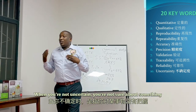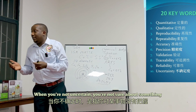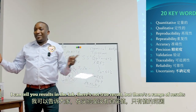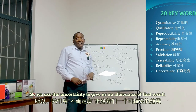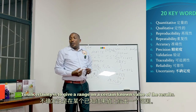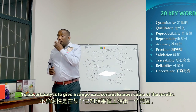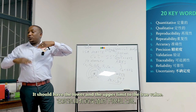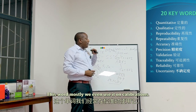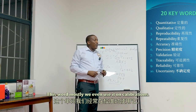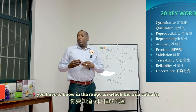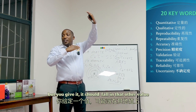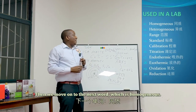The tenth word is uncertainty. When you're uncertain it means you're not sure about something. In the lab there's no single true result — there's a range of results. We use uncertainty to give an allowance on that result. Uncertainty gives a range on a certain known value; results should have a lower and upper limit relative to the true value. We mostly use it in calibrations — when calibrating an instrument, you have to know the range in which the true value should fall, plus or minus from the true value.